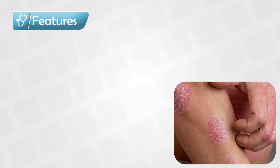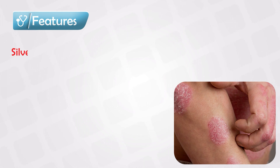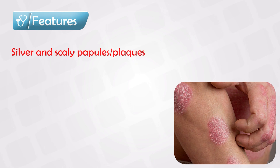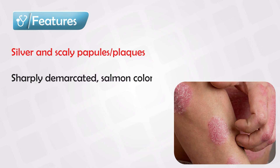Psoriasis is one of the most characteristic and defining dermatological diseases. It is simply defined as papules and plaques that are silvery or scaly. The area will be sharply demarcated, salmon-colored, and of course scaly.